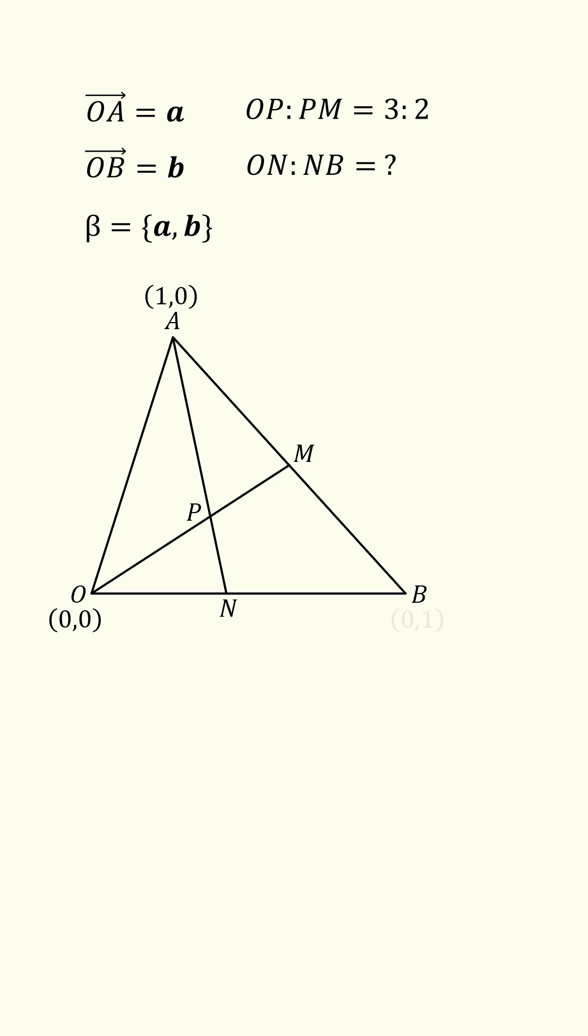So O is (0,0), A is (1,0), and B is (0,1). M is the midpoint of A and B, so it will be equal to (0.5, 0.5).